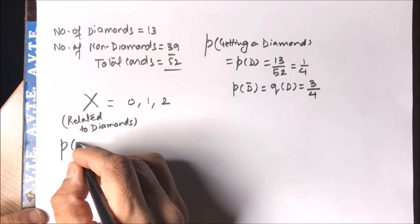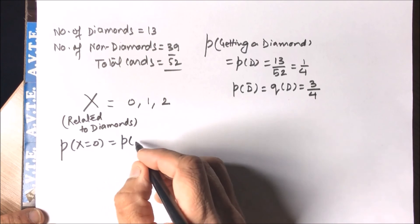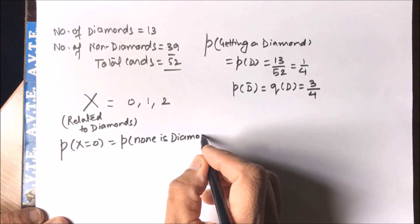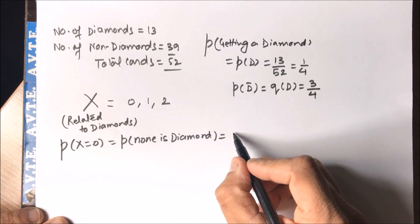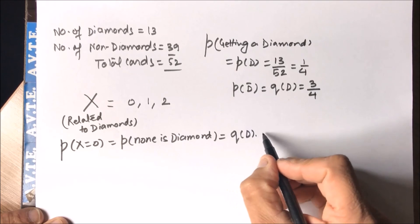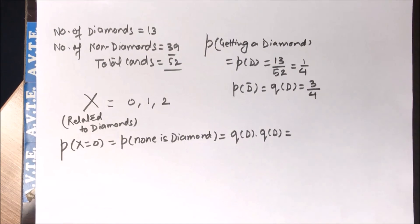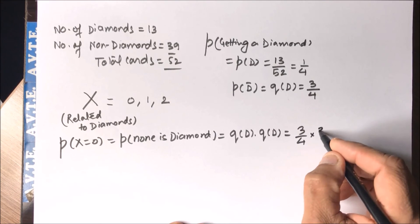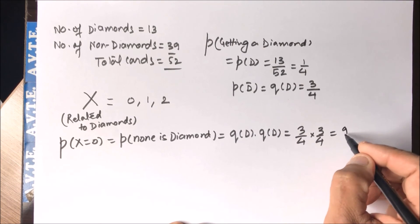When X = 0, meaning none is a diamond, that is failure and failure — not getting a diamond on either draw. There is no need to apply binomial here; we can do it manually. So P(X=0) = (3/4) × (3/4) = 9/16.